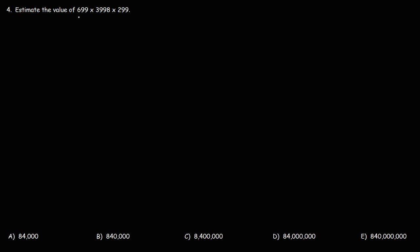Starting with the first one, we could round 699 to 700. The second number, 3,998, that's approximately equal to 4,000. And 299, we could round that to 300. So, we're going to follow the same process.